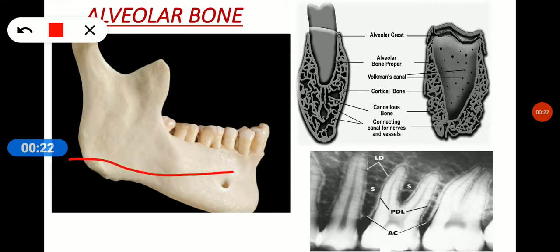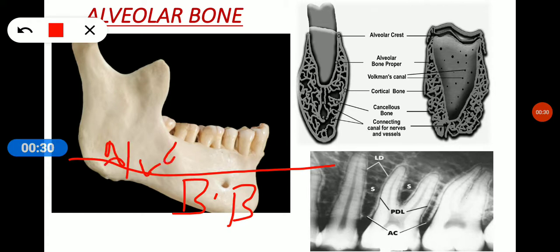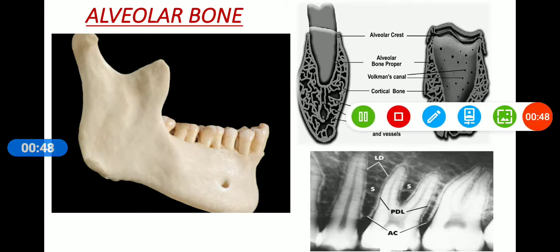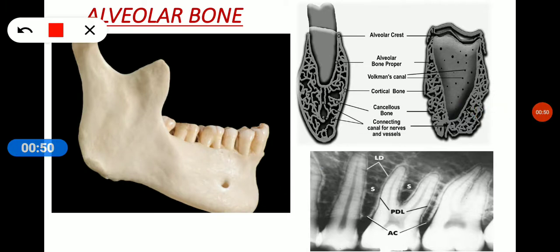Bone is divided into two parts: basal bone and alveolar process. It is called alveolar process because this part of the bone is covering the roots. So the part of the bone which is covering the root — this whole part — is called the alveolar process.